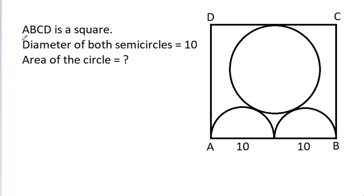In this video, we have given that ABCD is a square and the diameter of both the semicircles is equal to 10. We have to find the area of the circle.